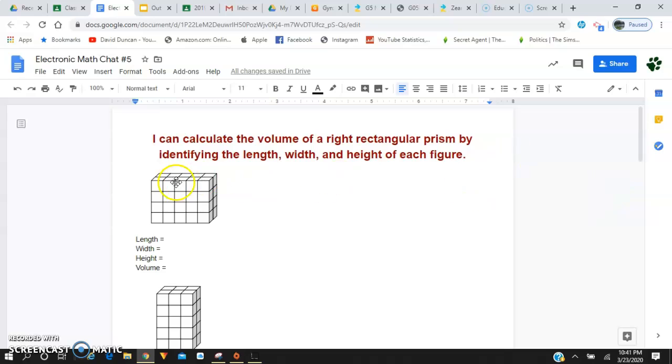So the first right rectangular prism we have right here, we need to identify the length, width, and height. And then remember that in order to find the volume of a right rectangular prism, the formula is going to be volume equals length...